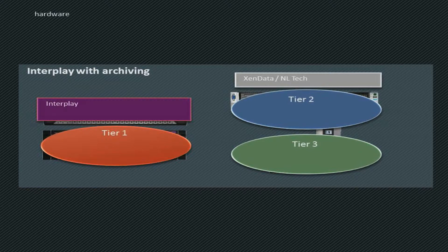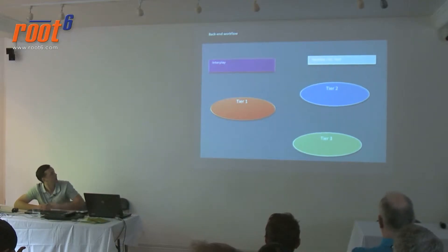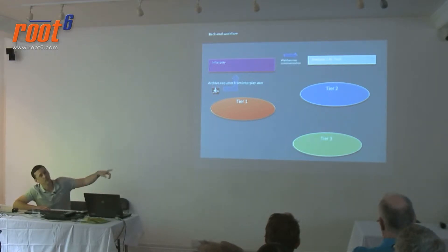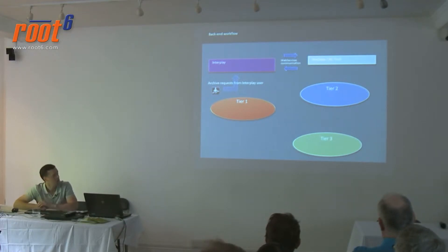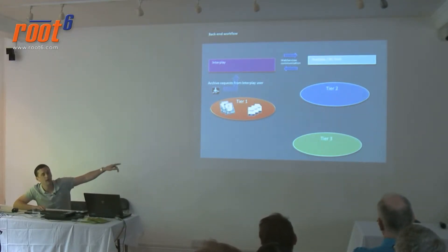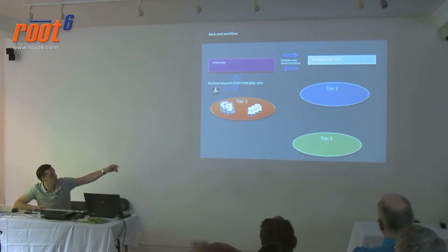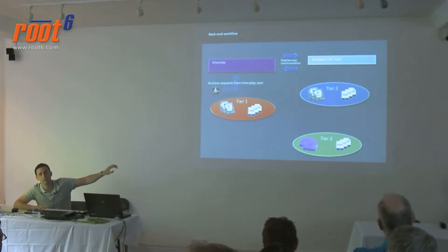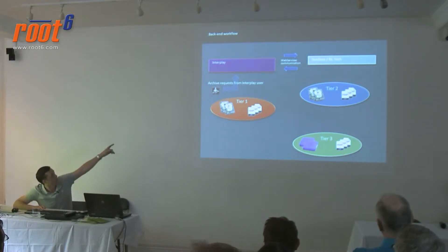The workflow we're going to demonstrate: from Avid Interplay Access, we request an archive of some content, which goes into the Interplay infrastructure. Web services communication — a protocol between multiple manufacturers — then tells us where our Avid MXF media is residing on our ICES 5000 disk. We manage the migration to our lower-grade tier 2 disk, and then the data also goes down to our LTO tape.